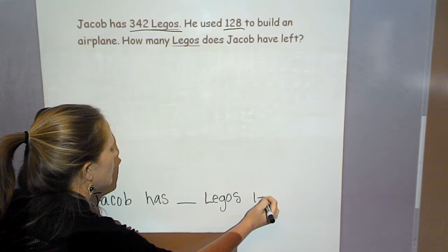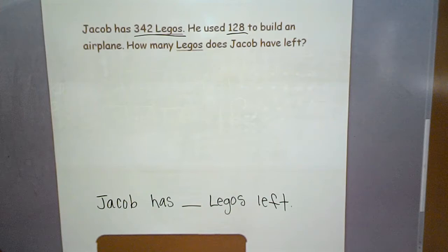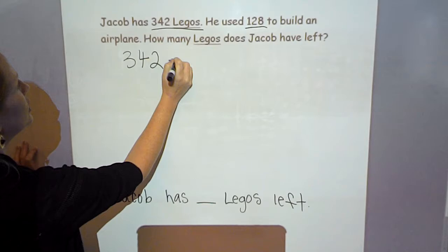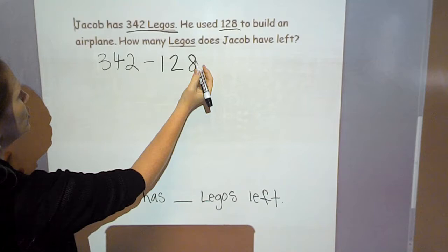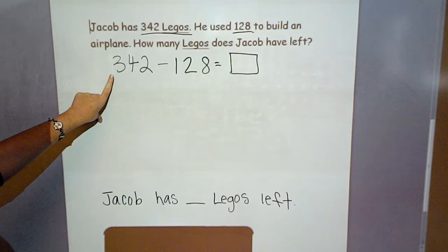So again, we've got our total. So our total is 342 Legos. And he used 128 of those. So I'm going to be taking away 128 Legos because he already used those and I'm trying to figure out what's left.